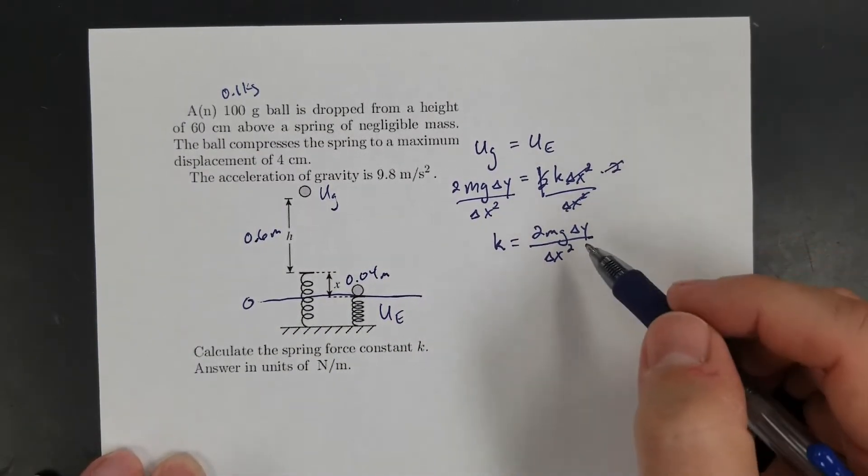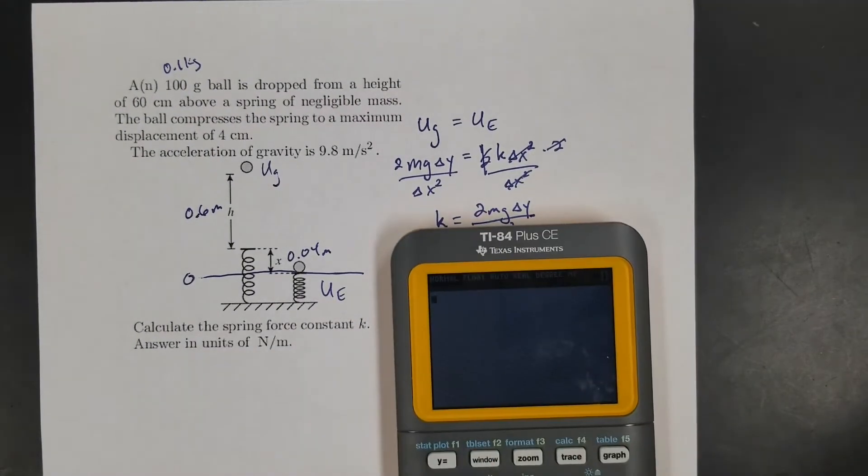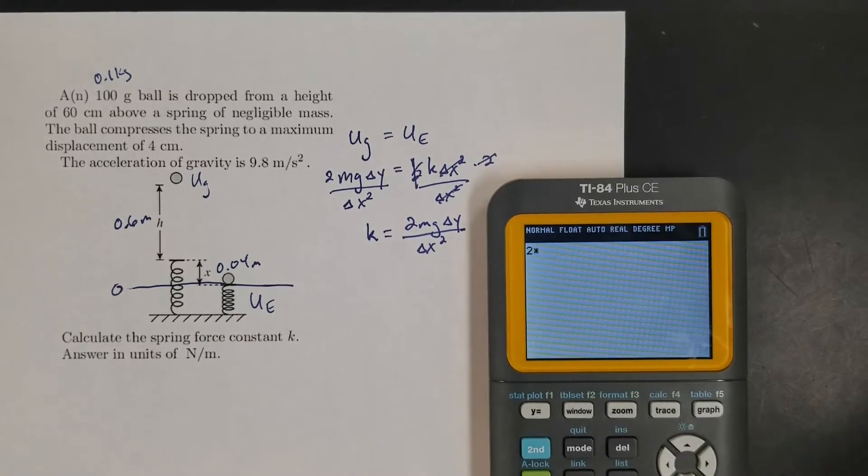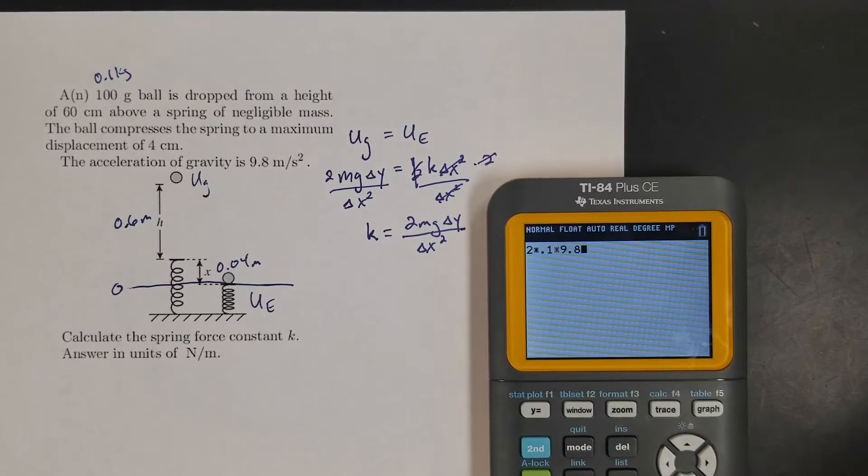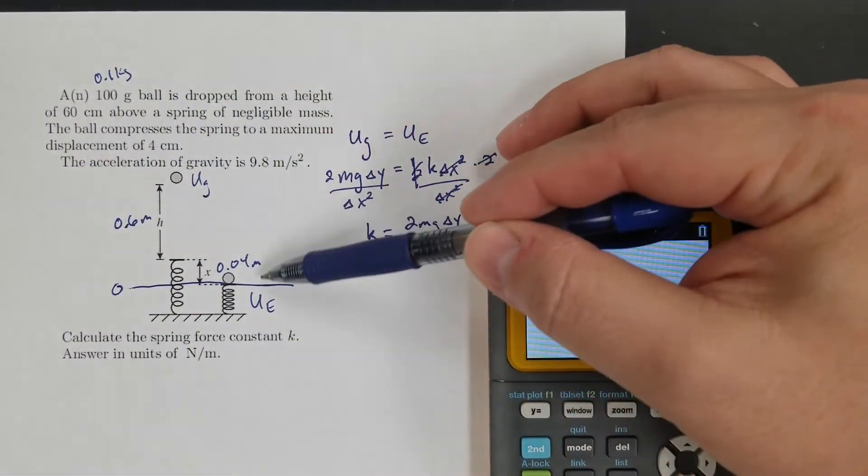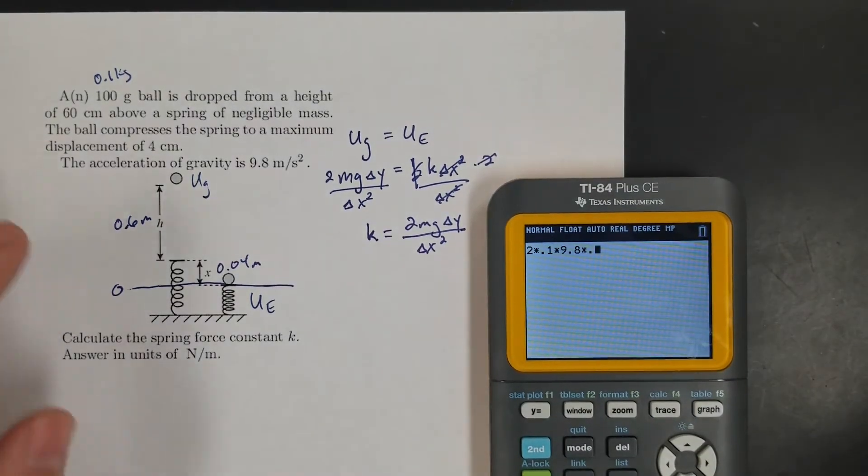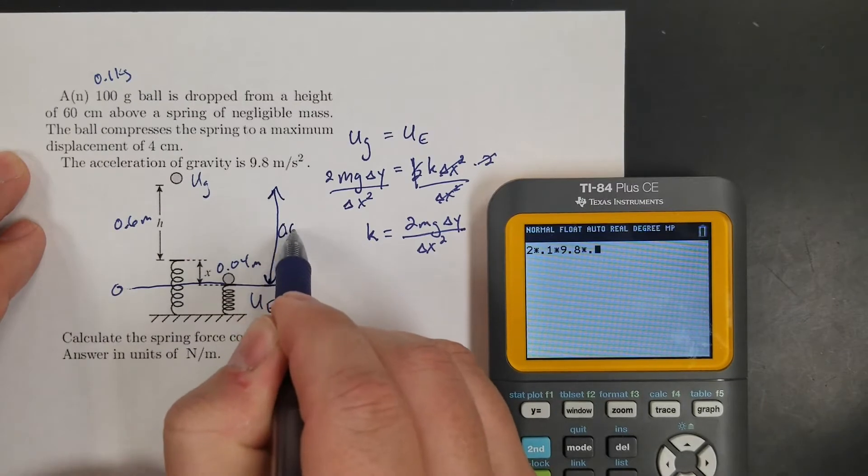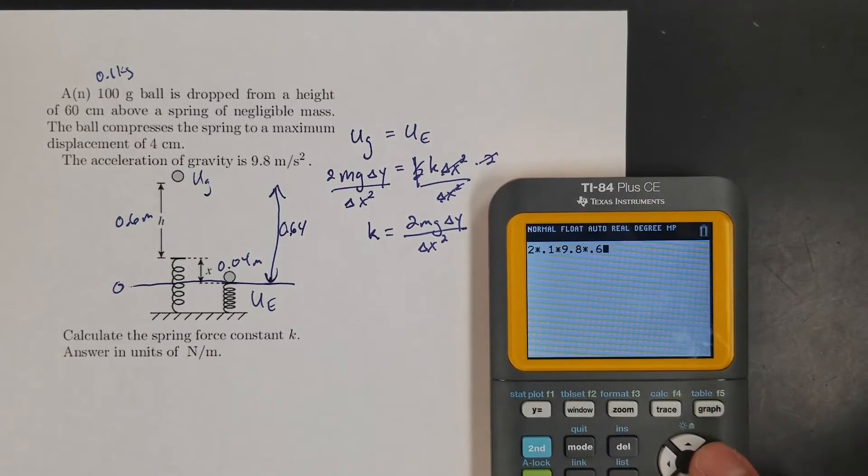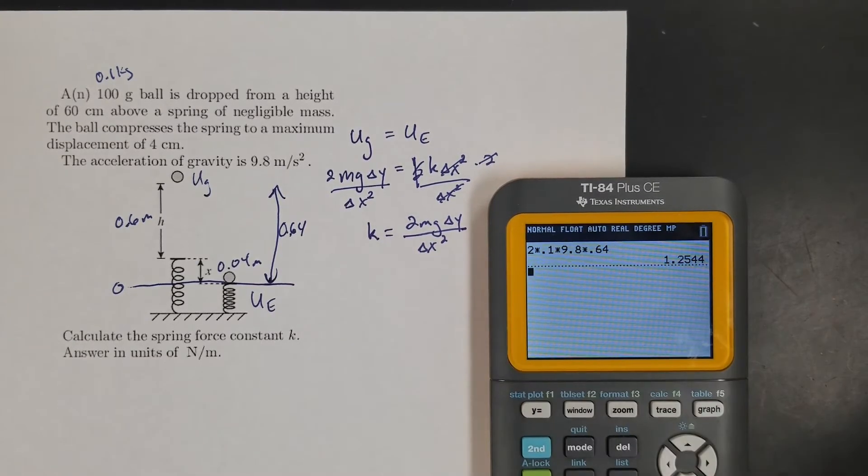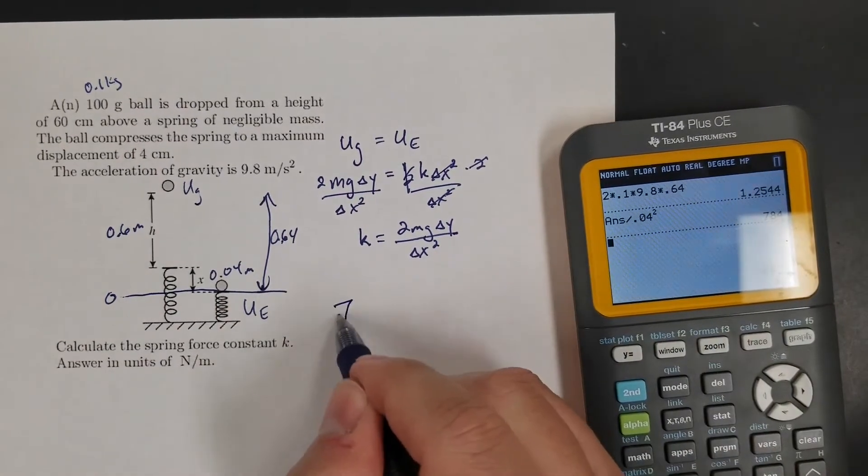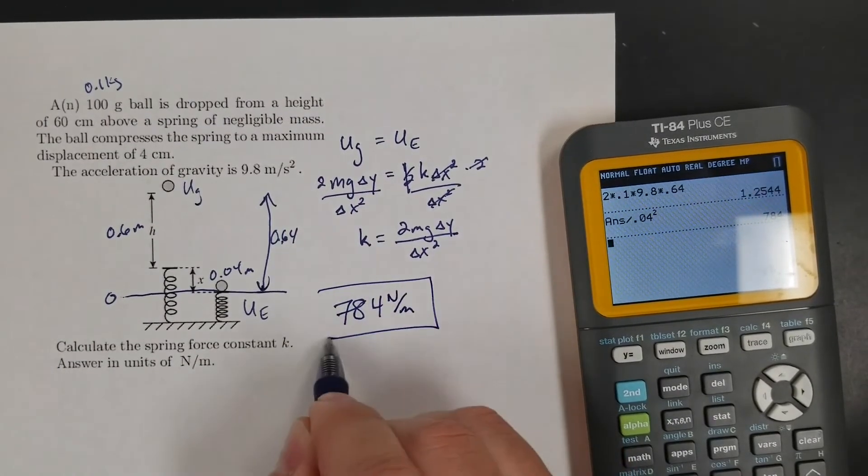Let's plug in and solve. 2 times the mass, 0.1, times g, 9.8, times the height... Oh, sneaky, almost got me! 0.6 is this height, but the total height is going to be all the way down here, so my height's got to be 0.64. From there to there is the sum of these two. Then divide by the compression of the spring squared, so that's 0.04². 784 Newtons per meter - that's my spring constant.